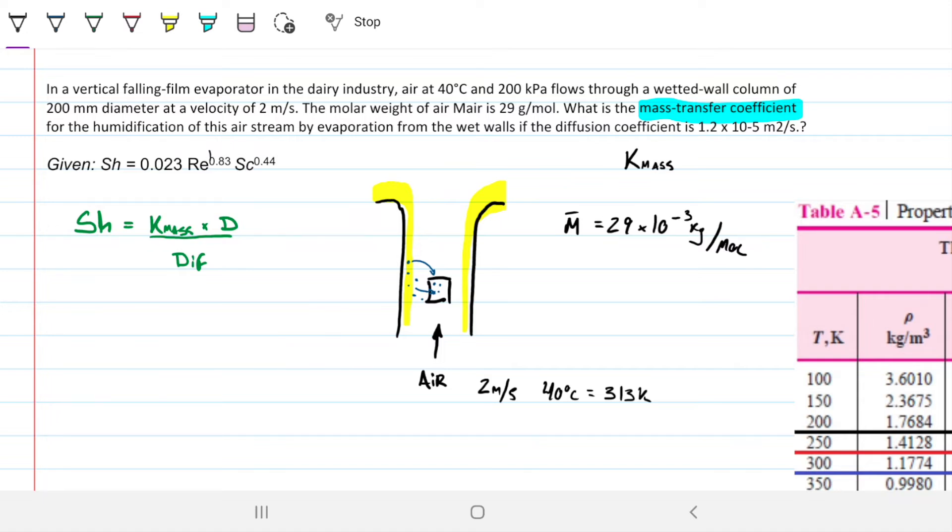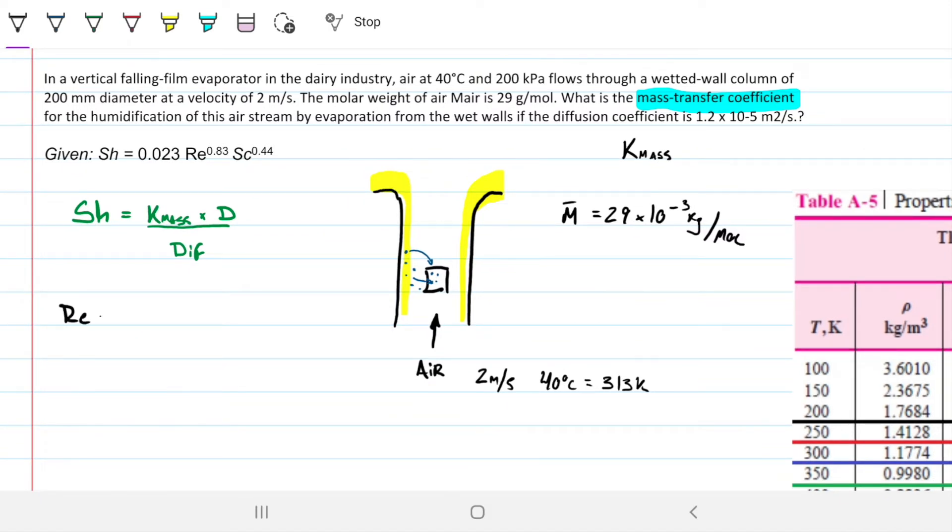To do this, we need to find Sherwood. To find Sherwood, we need Reynolds and Schmidt. To find Reynolds and Schmidt, we need our density, our velocity which we have, the diameter which is the characteristic length and a falling film evaporator. This is a 200 millimeter tube. Just to be clear, this product is going downwards, whilst the air is going upwards. We have a pressure of 200 kilopascals, and we need to account for that when we're calculating density.